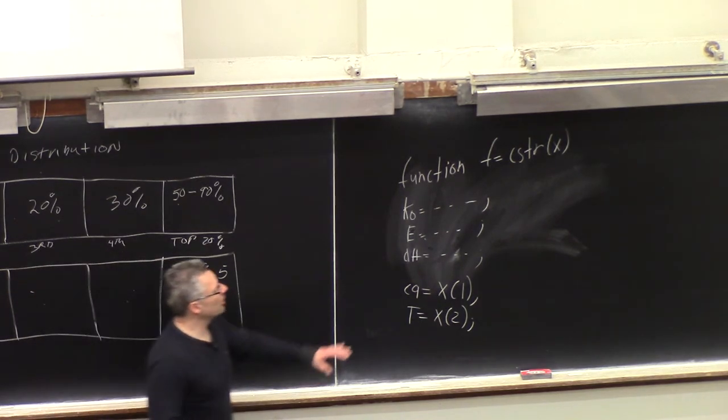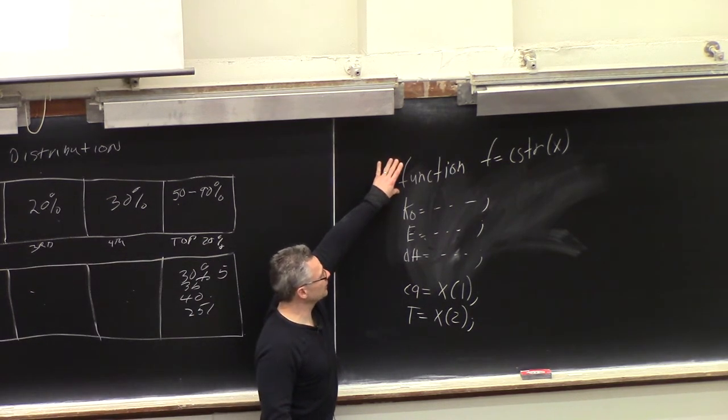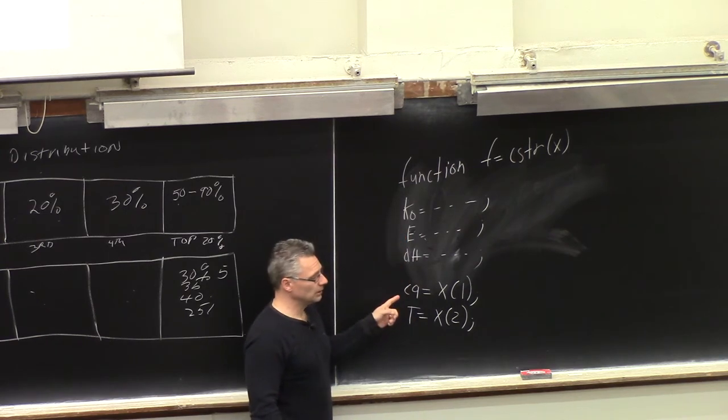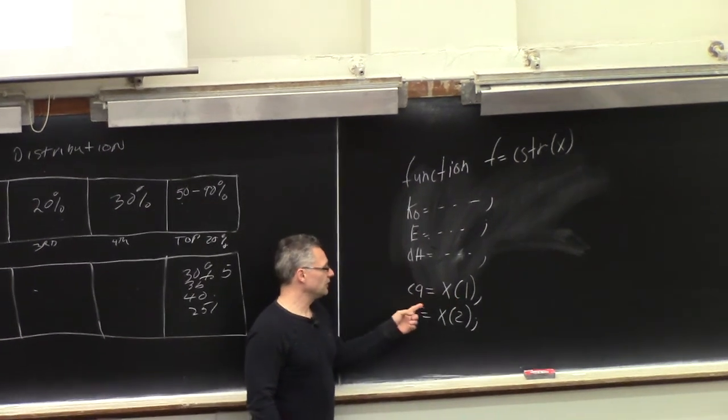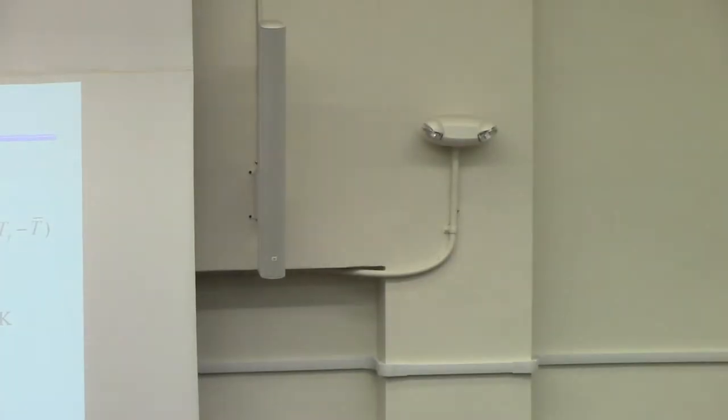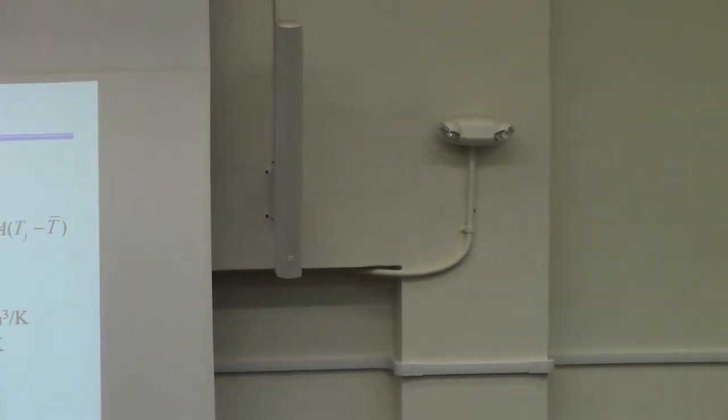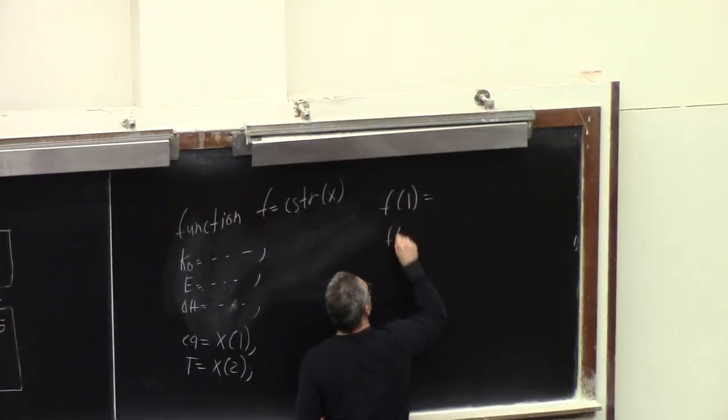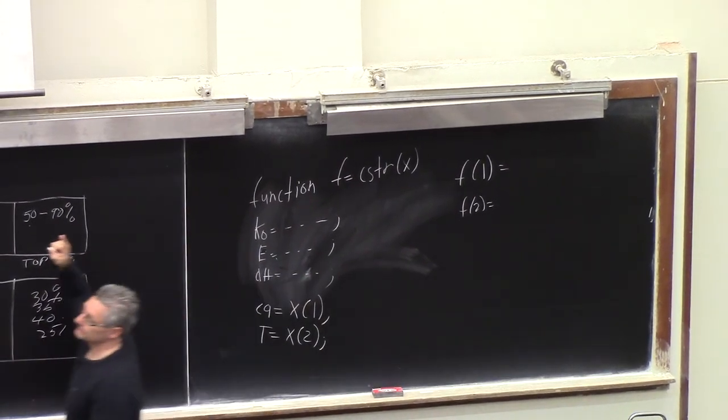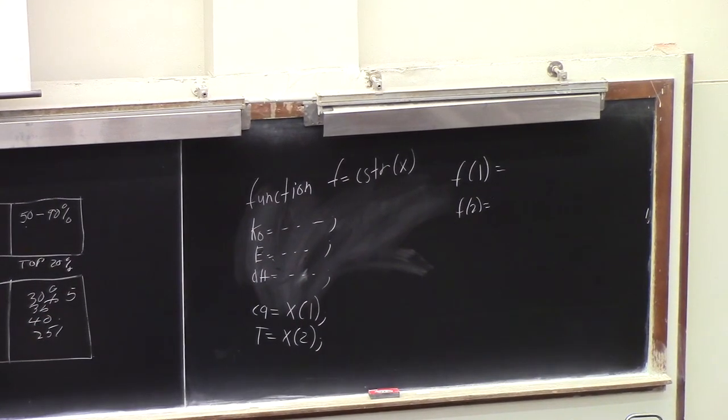And then probably, once you're done with all that at the end, you want to do the following. You want to say, please define a variable called the concentration of A. That'll be the first component of X, because I'd rather call it the concentration of A than X1. And then the temperature, that's X2. It just makes it easier. Now I can refer to concentration of A and temperature instead of X1 and X2. So first step, define all, first step is write this function thing here. Second step, define all the parameters. Third step is, for simplicity and convenience, define concentration of A and temperature to be the components X1 and X2.